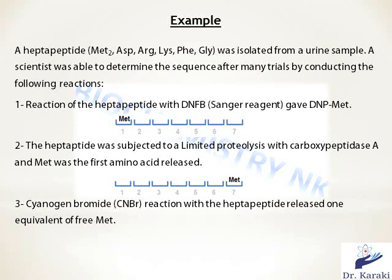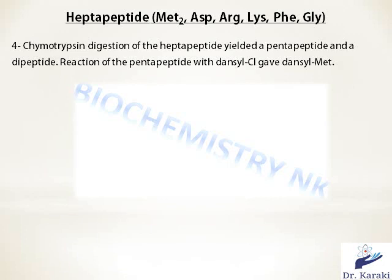In the third reaction, cyanogen bromide reacts with the heptapeptide and releases one equivalent of homoserine. Cyanogen bromide cleaves specifically on the carboxyl end of methionine residues. Cutting after methionine releases a methionine, so it must be the first amino acid — which we already knew. So we now know both the first and last amino acids are methionine.